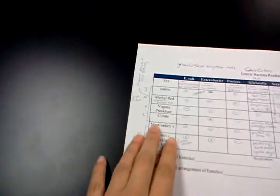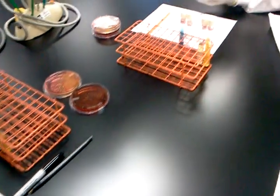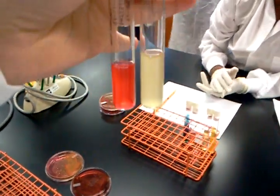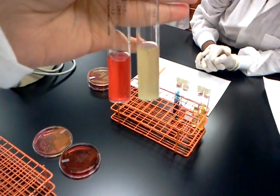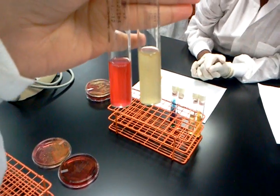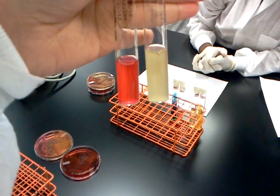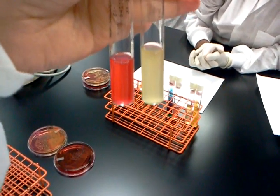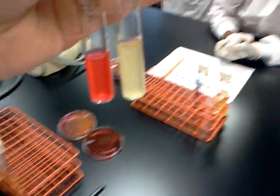Next test is methyl red, which is positive when it is red and indicates acid production. In this case it is acidic. It is the opposite of phenol red which is basic red and acidic yellow. This one is acidic red and basic yellow.